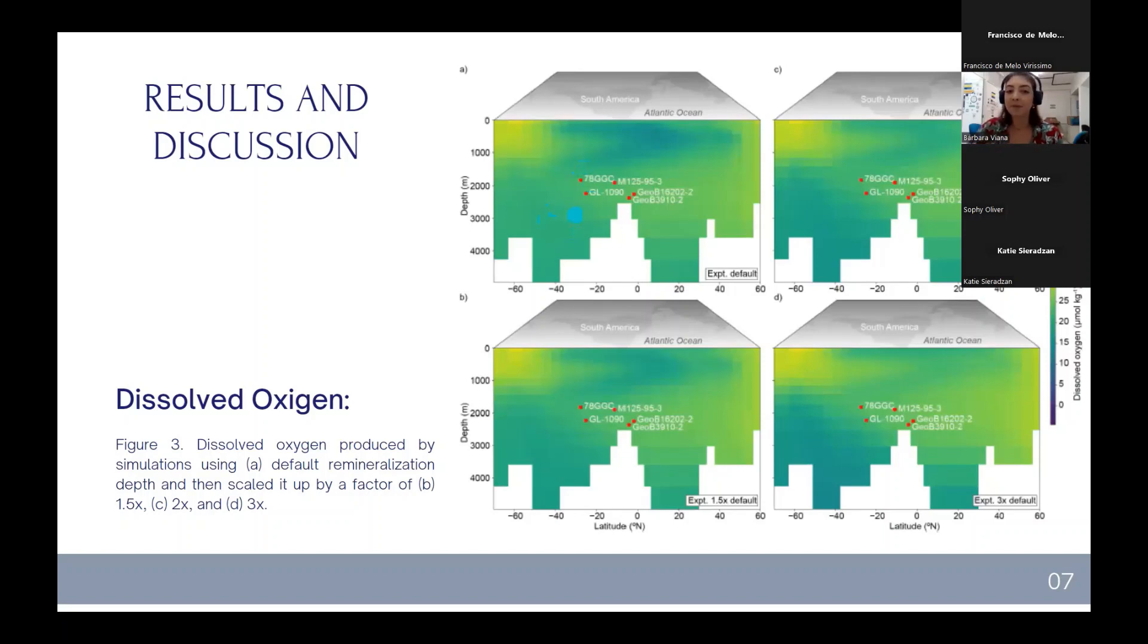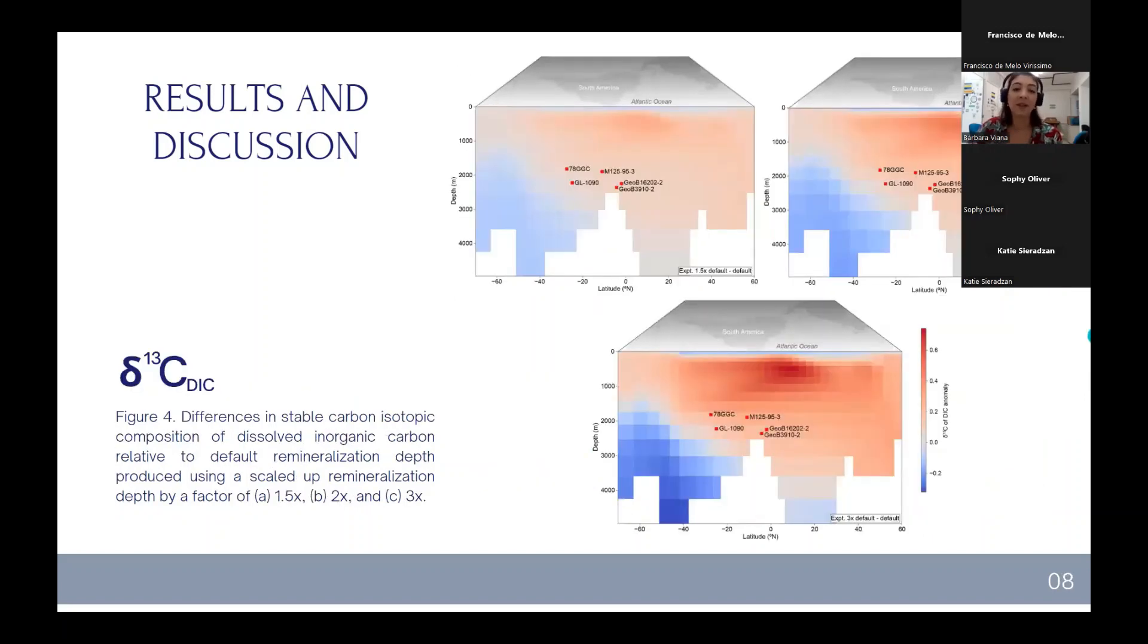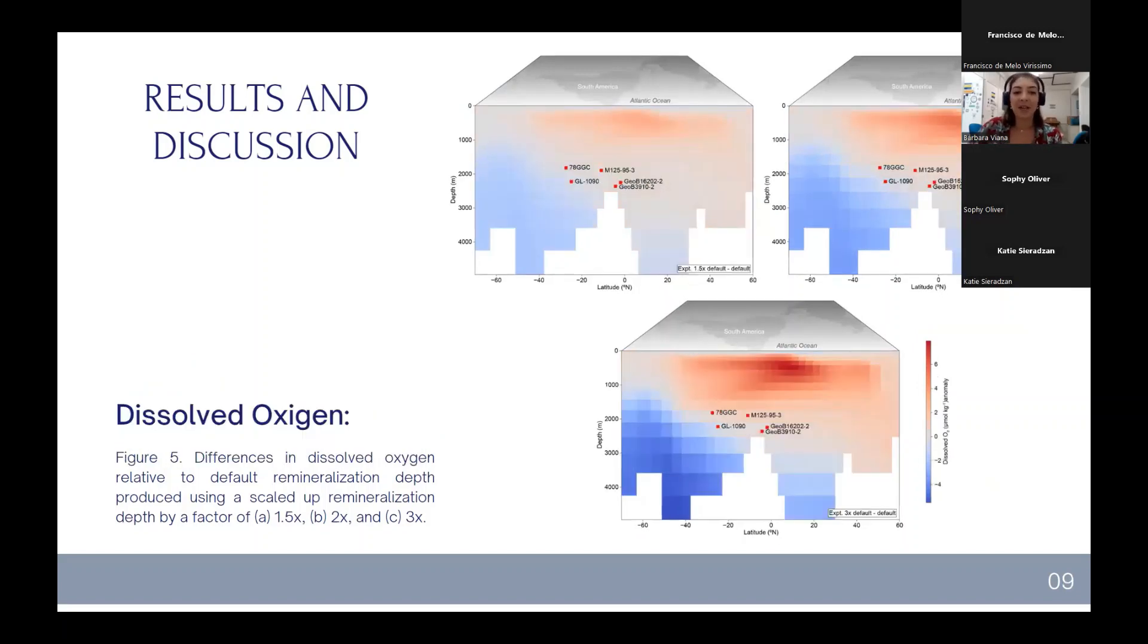Here, from the default until the three times the default, we had a small increase of oxygen in the water column. So here is only the difference to assure that actually we had an increasing of carbon-13 and not negative anomalies from the default to 1.5, 2, and 3 times the default remineralization depth. Same with oxygen.